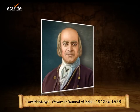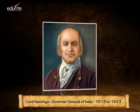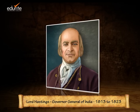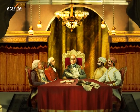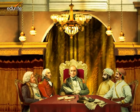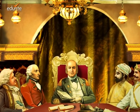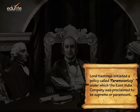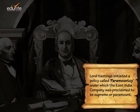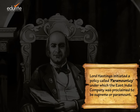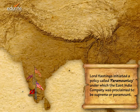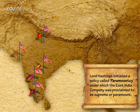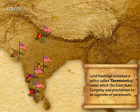Lord Hastings served as the Governor General of India from 1813 to 1823. He followed diplomatic, political and economic methods to acquire territories rather than violence. He initiated a new policy called Paramountcy, under which the East India Company was proclaimed to be supreme or paramount.